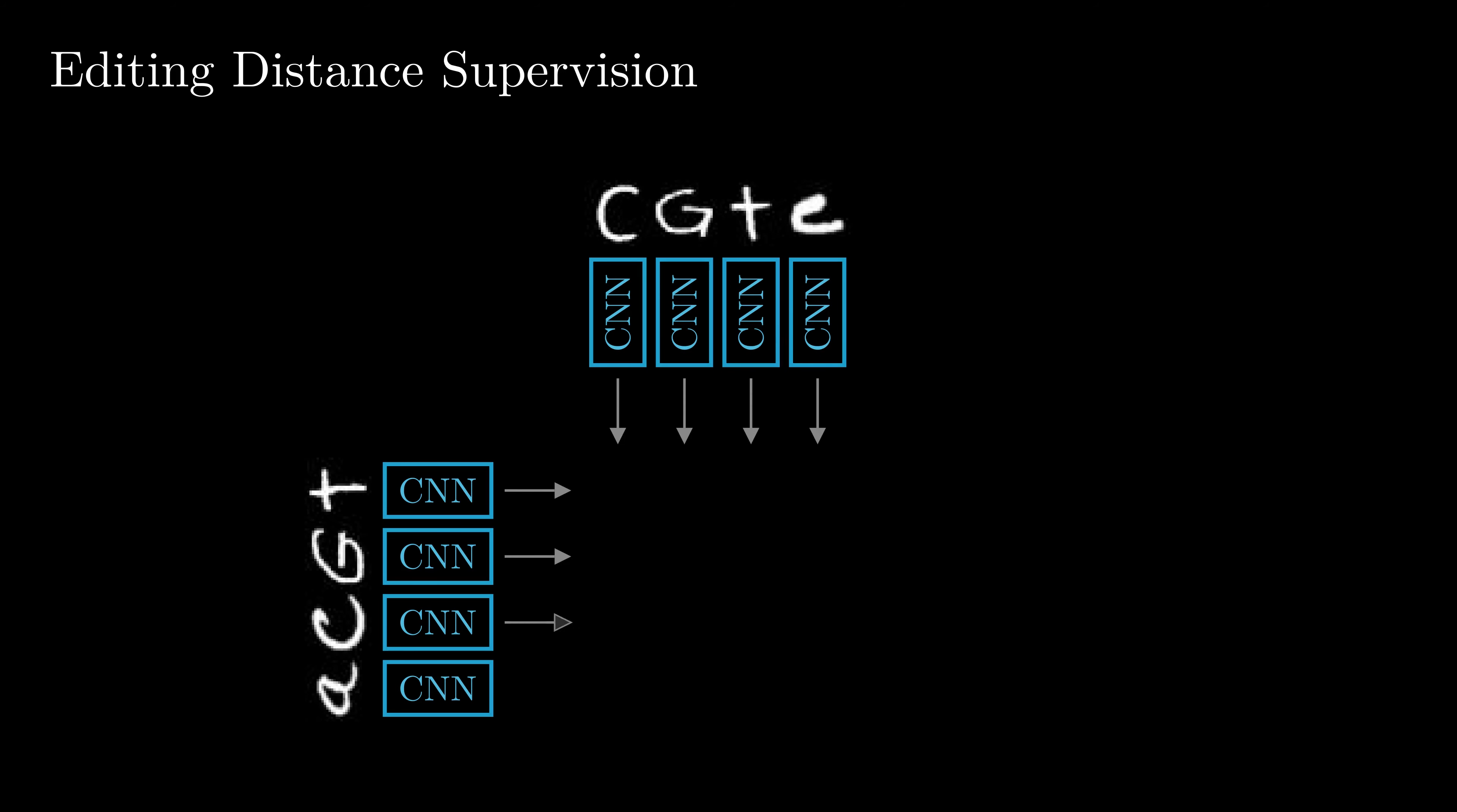Now, we come to our fourth and final experiment, which is the Levenshtein editing distance supervision. Here, the setting is that we are given two strings of MNIST characters, and as supervision we only obtain the editing distance between the two strings.